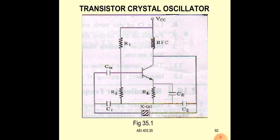RC oscillator frequency stability is also not up to the mark. To overcome these disadvantages we are going for the crystal oscillator. Crystal oscillator produces a good stability signal — good frequency stability signal — in the frequency range up to 20 megahertz.